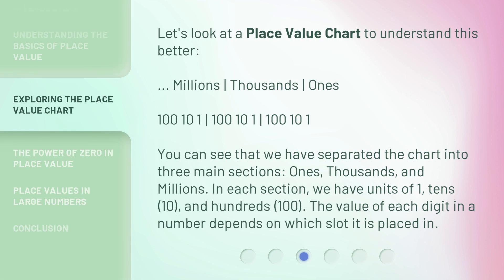Let's look at a place value chart to understand this better. The chart is organized into three main sections: millions, thousands, and ones.